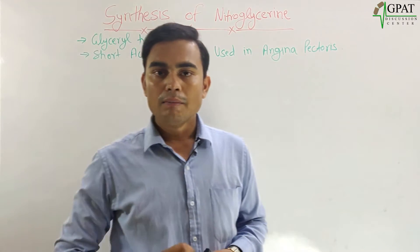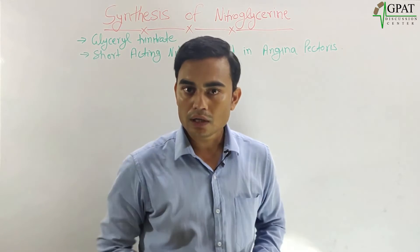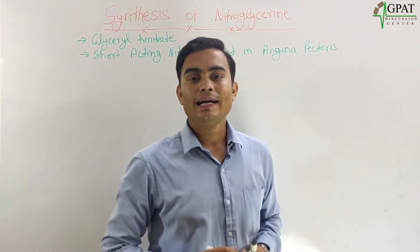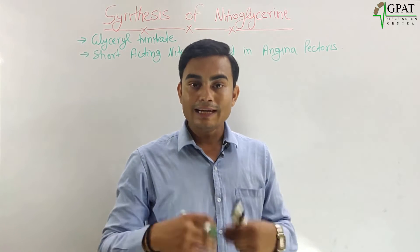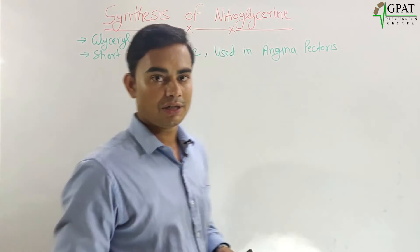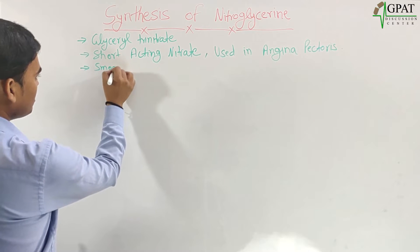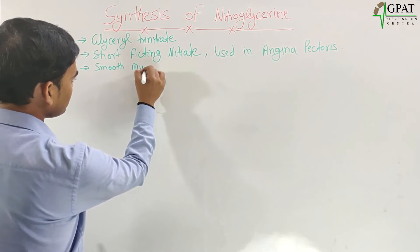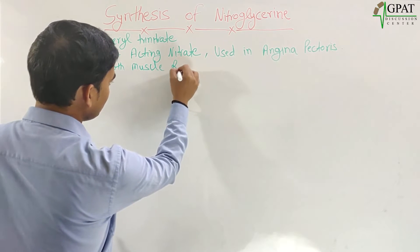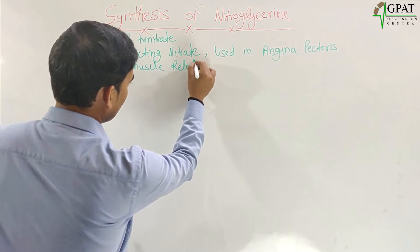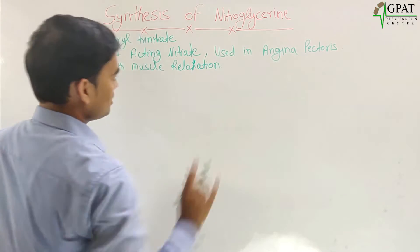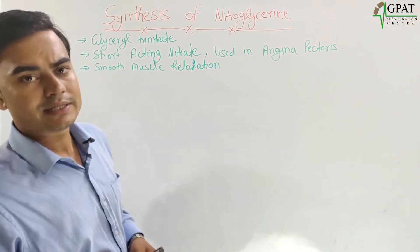Nitroglycerin mainly reduces the preload as well as some action on the afterload, which leads to smooth muscle relaxation. So mainly causes smooth muscle relaxation.